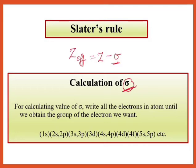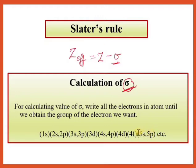Sigma is the screening constant, and to calculate its value we write the electronic configuration of the atom up to the group of the electron we want. For example, if we need to find the effective nuclear charge for electrons in ns and np orbitals, we write the configuration up to that point. Then we do the grouping: 1s separately, then 2s2p together, then 3s3p, then 3d separately, then 4s4p together.